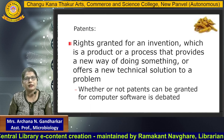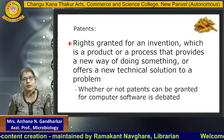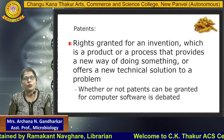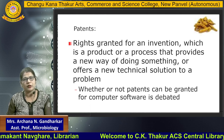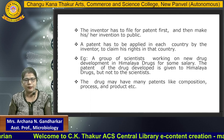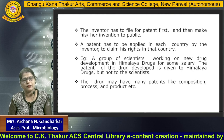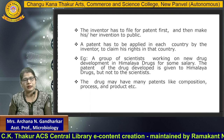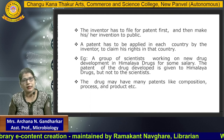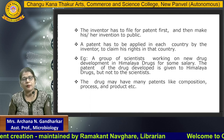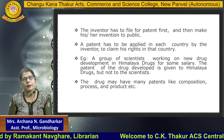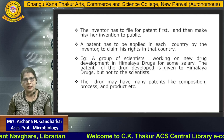What is the meaning of the patent? Patents are the rights granted for an invention, which is a product or maybe a process, that provides a new way of doing something or offers a new technical solution for a problem. Whether or not a patent can be granted for computer software is difficult. The inventor has to file the patent first, then make the invention public. The patent has to be applied in each country for the inventor to claim rights in that country. For example, if a group of scientists are working on drug development for Himalaya drugs, the patent is given to Himalaya drugs but not to the individual scientists. The drug may have a number of patents, such as for the composition, process, and product.